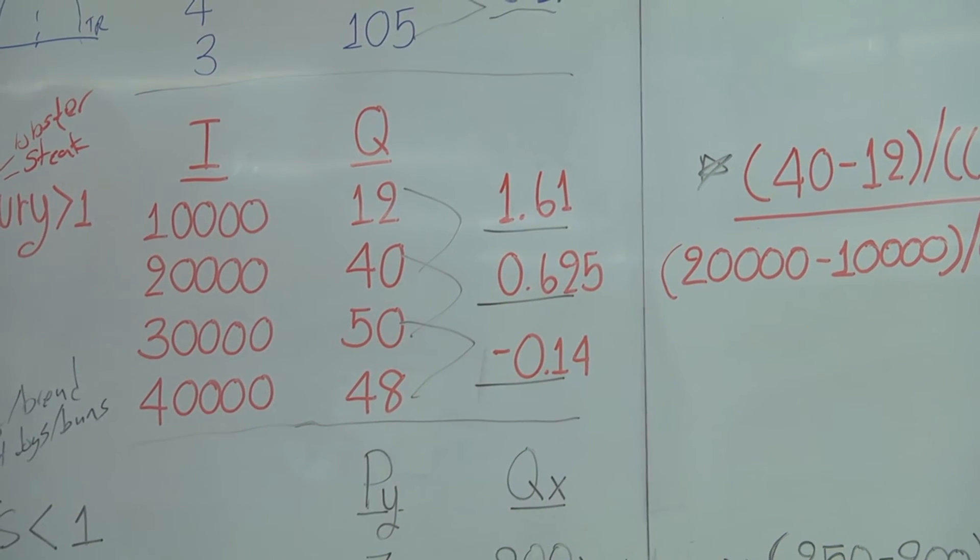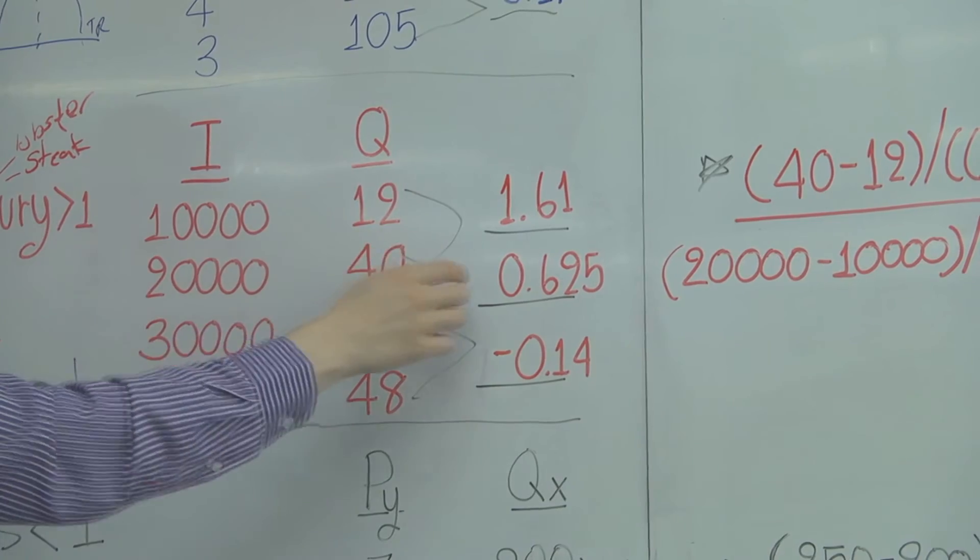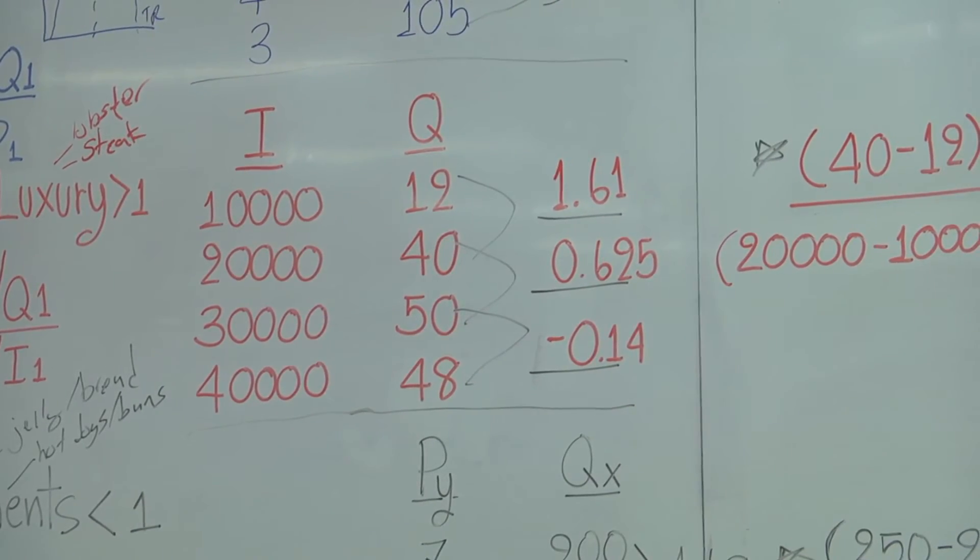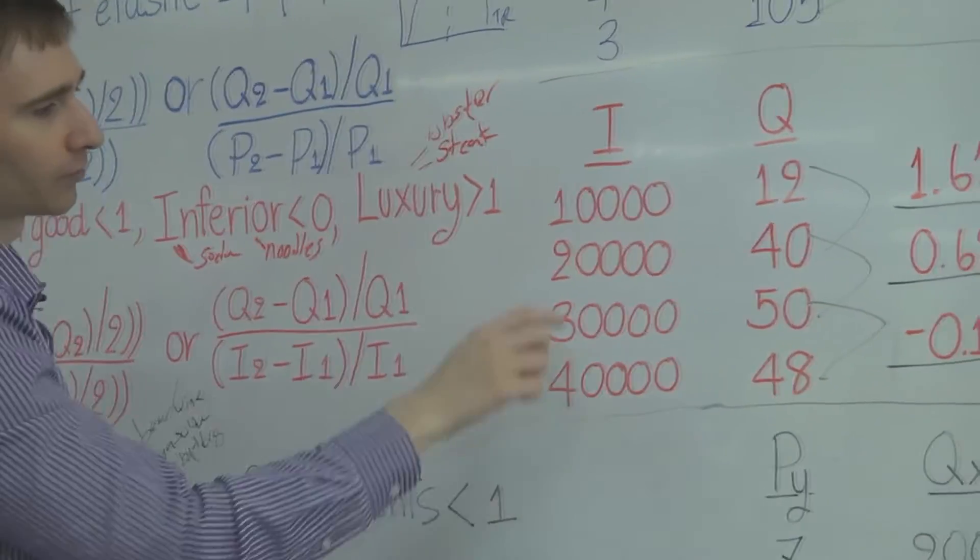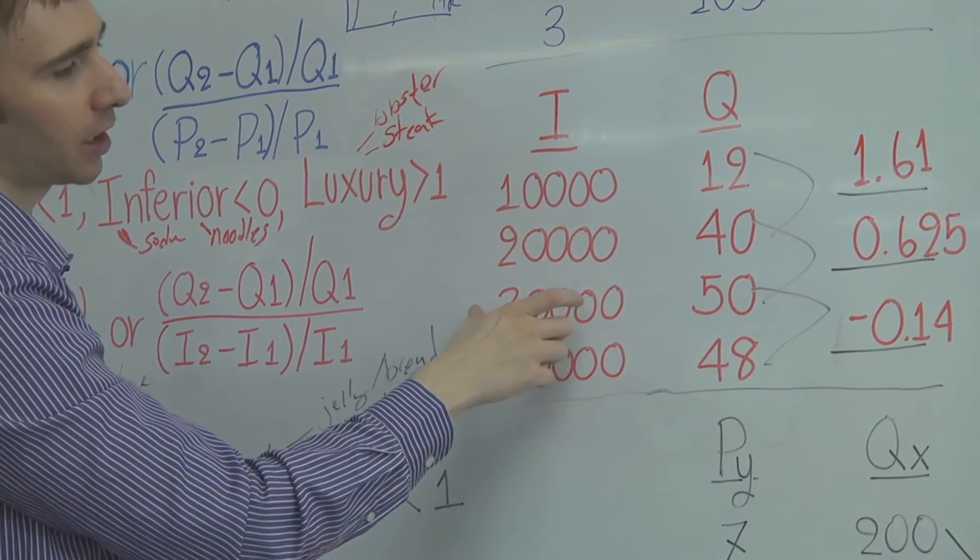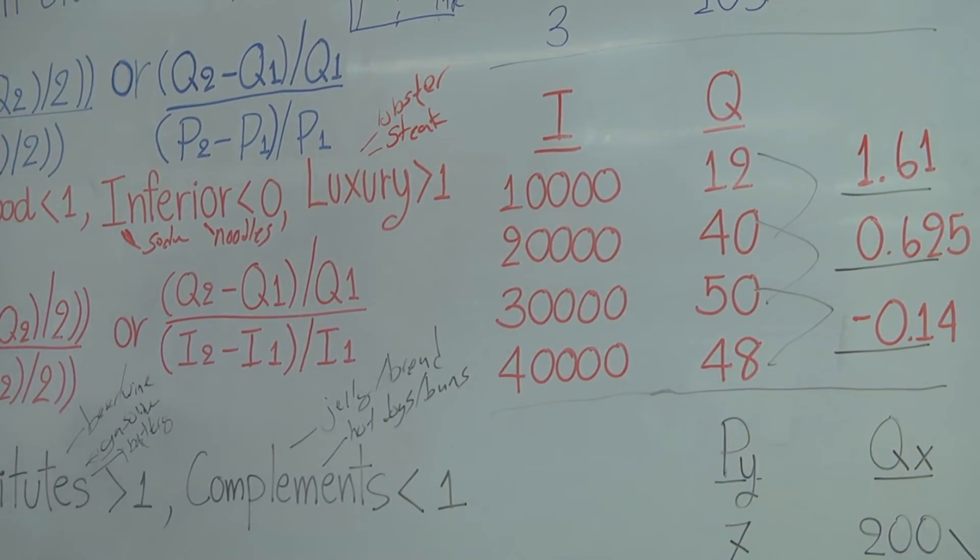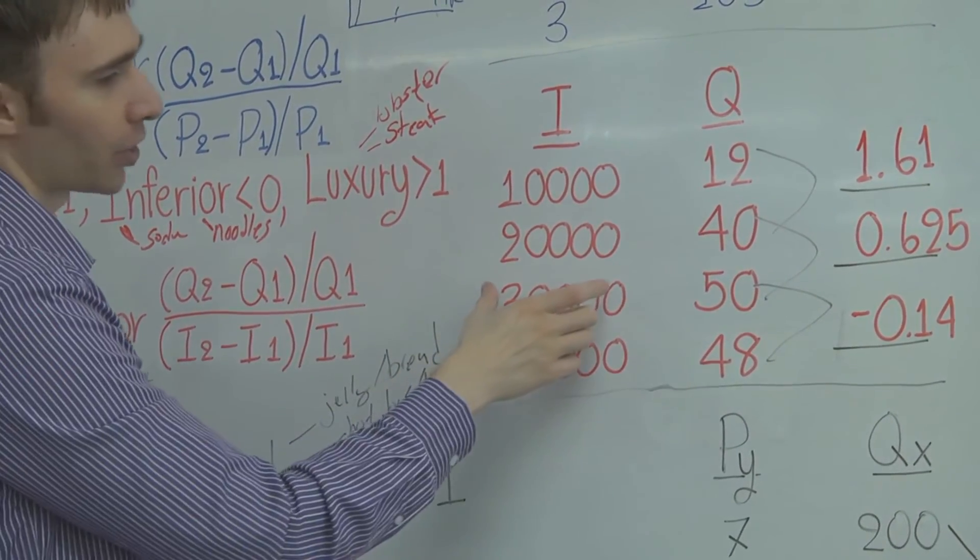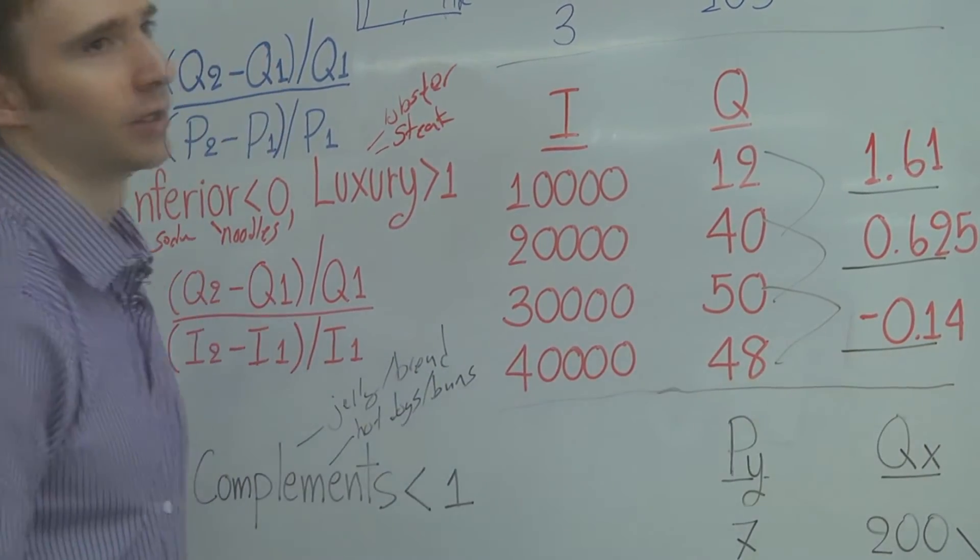For income elasticity. So as I go from 10,000 to 20,000, I'm 1.61. So 1.61 is greater than one. So it's a luxury good. When I go from 20,000 to 30,000 in income, now I'm less than one, more of a normal good. And when I go from 30 to 40,000, I'm less than zero. I'm now an inferior good.